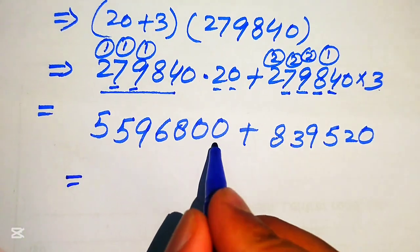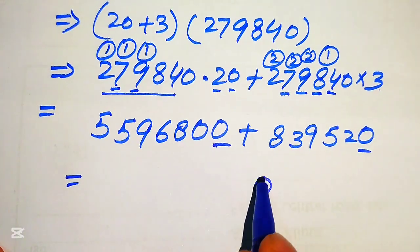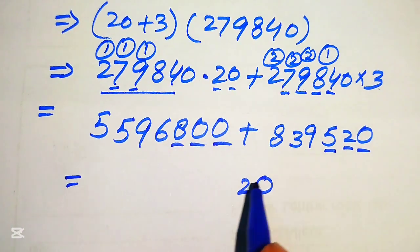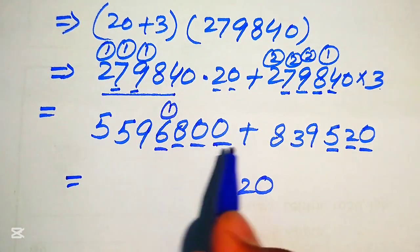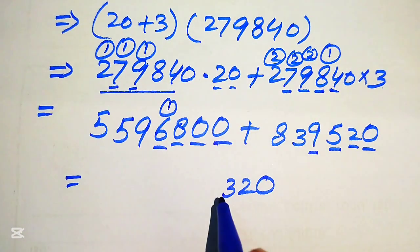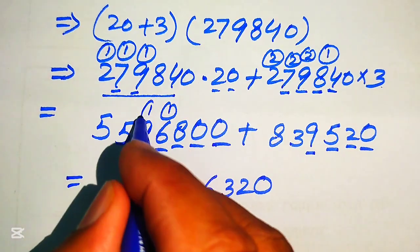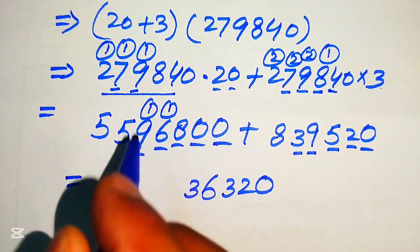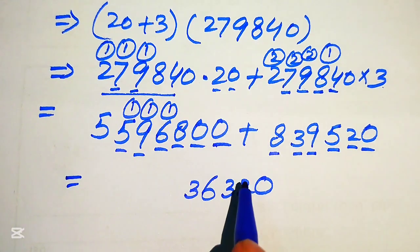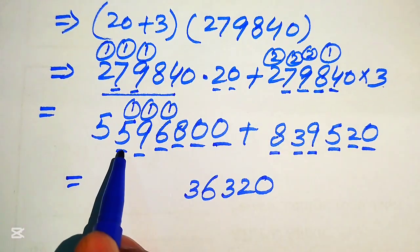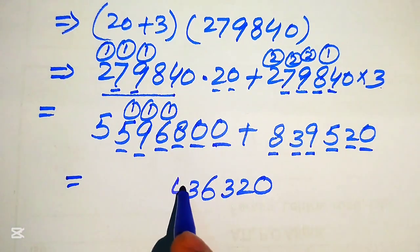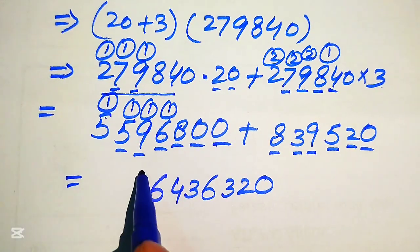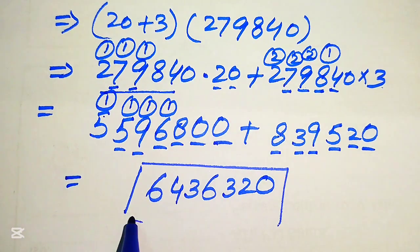Summing up the two values: 0 plus 0 is 0; 0 plus 2 is 2; 8 plus 5 is 13, write 3 carry 1; 6 plus 9 plus 1 is 16, write 6 carry 1; 9 plus 3 plus 1 is 13, write 3 carry 1; 5 plus 8 plus 1 is 14, write 4 carry 1; 5 plus 1 is 6. So this is our final simplified form of the given question — this is the final answer.